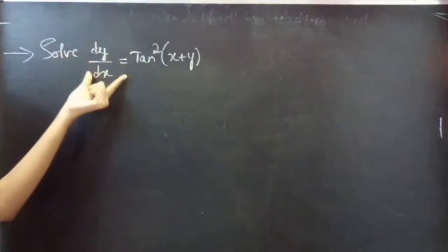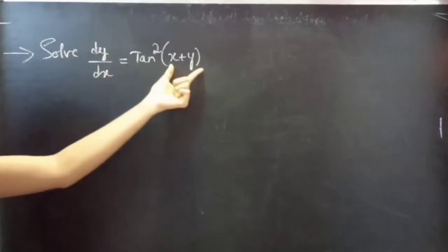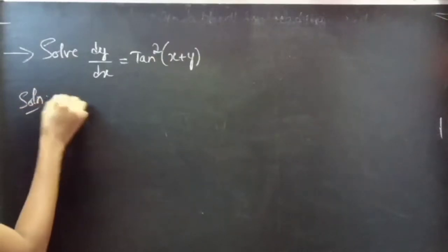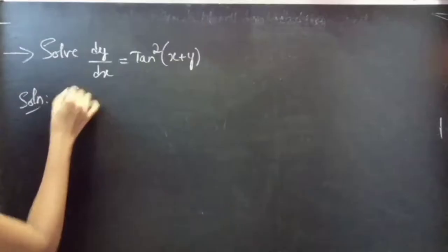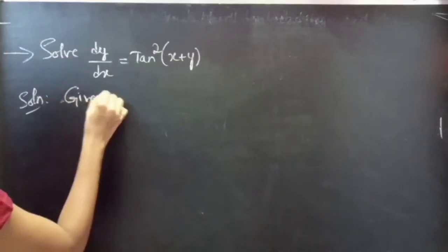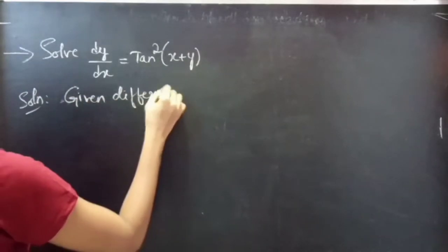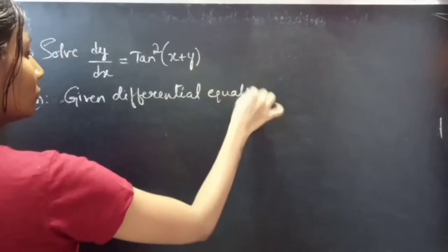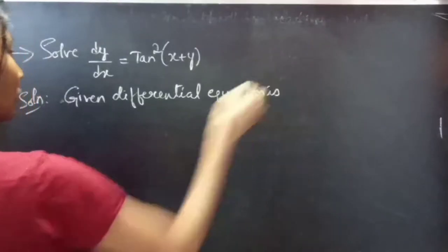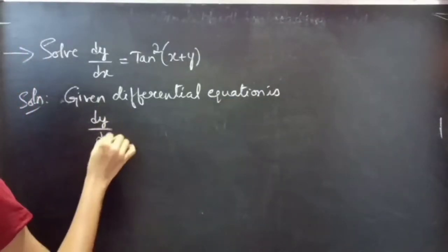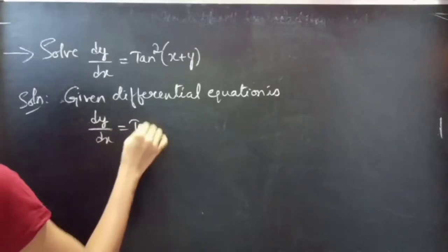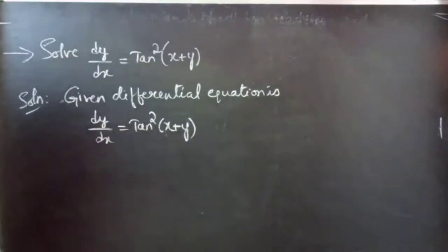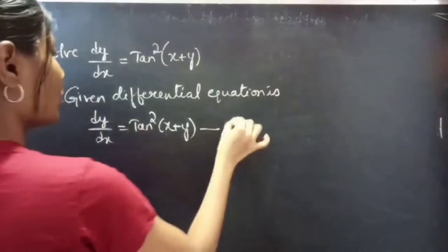Problem. Solve dy by dx equals to tan square of x plus y. This is equation 1.